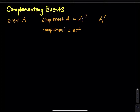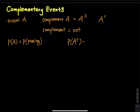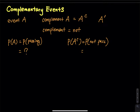So let's say the probability of event A means the probability of passing a test. And then what about A-complement? A-complement means the probability of not passing. So let's say I want to find the probability of passing, but this probability is very difficult to find. How do I use complementary events to find this probability without too much effort?